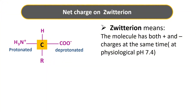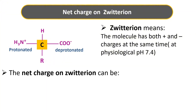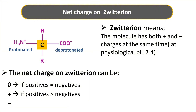The net charge on the zwitterion can be zero, positive, or negative. The net charge will be zero if positive charges equal negative charges — that is, the total charge on protonated and deprotonated groups are the same. The net charge will be positive if protonated groups exceed deprotonated groups, and negative if deprotonated groups exceed protonated groups.